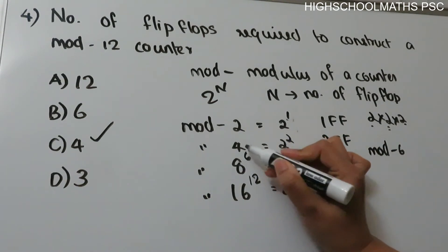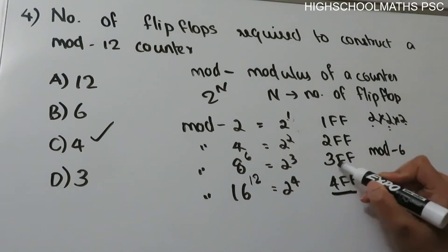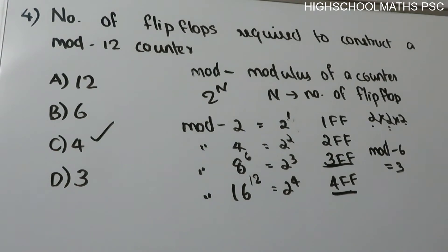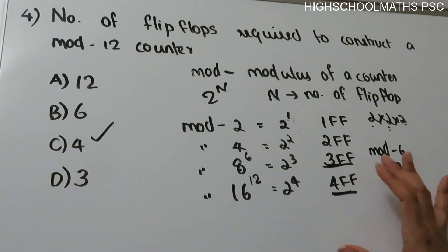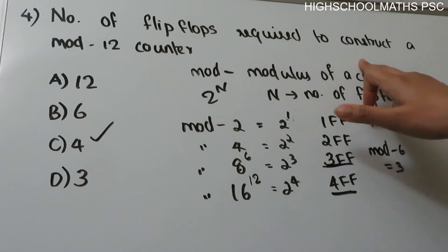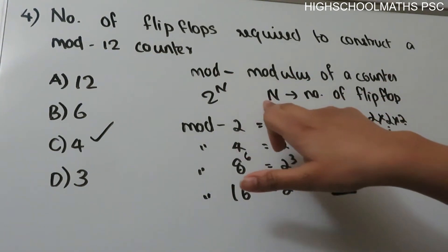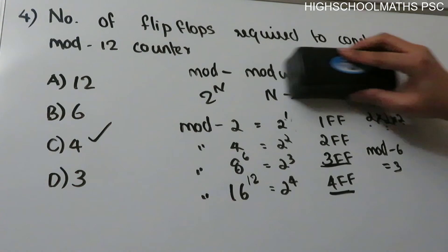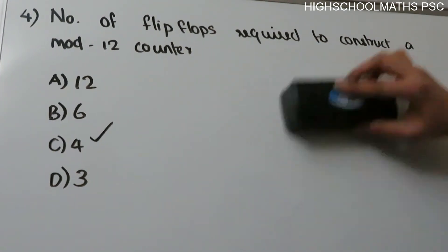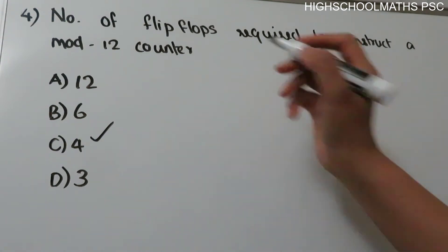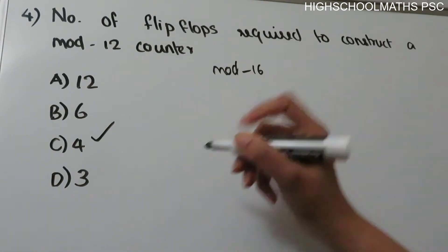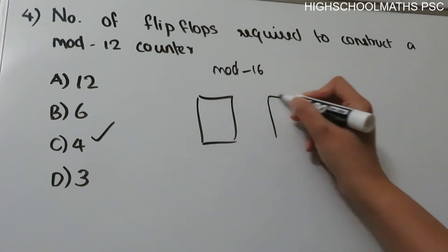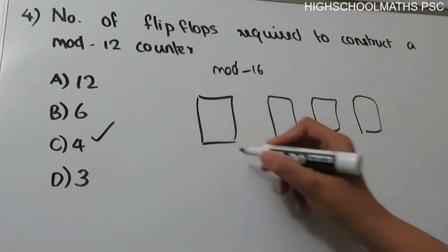In this case, we have 3 flip-flops for mode-8 and 4 flip-flops for mode-16. In mod-16, there are 16 discrete states and 4 flip-flops with 4 outputs. Mode-12 falls between mode-8 and mode-16, so we need to use 4 flip-flops with a modified design.